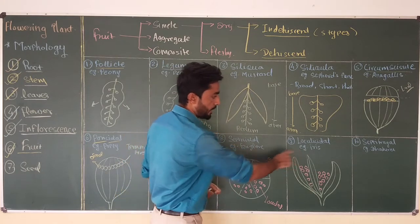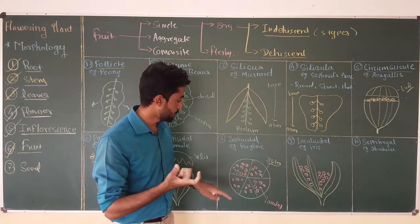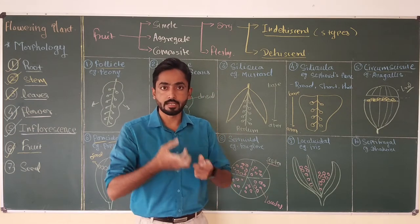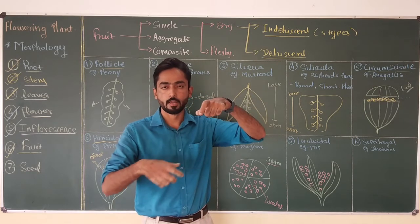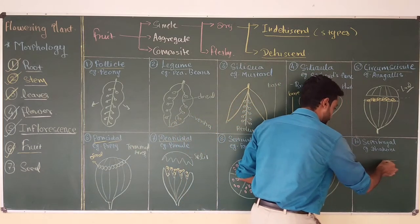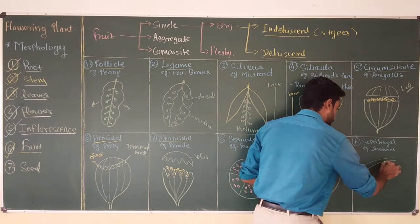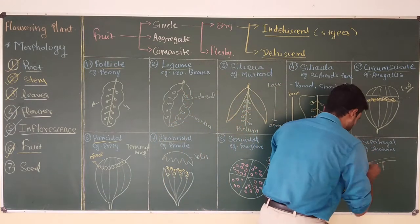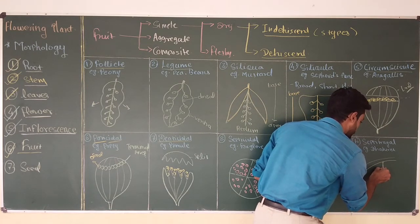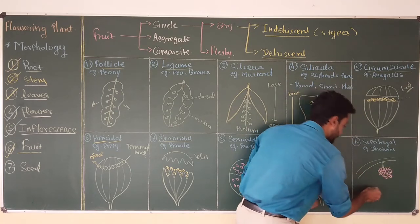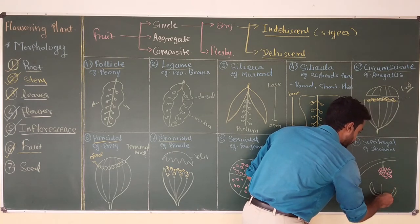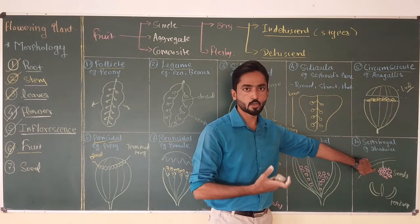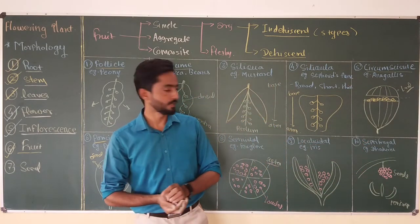The last type of dehiscent fruit is septifragal. It is a combination of both septicidal and loculicidal — the fruit breaks open from both the septa and the locules. Due to this, the entire pericarp dissociates and falls off, and only the seeds remain attached at the site of the fruit on the branch. Example is Datura.